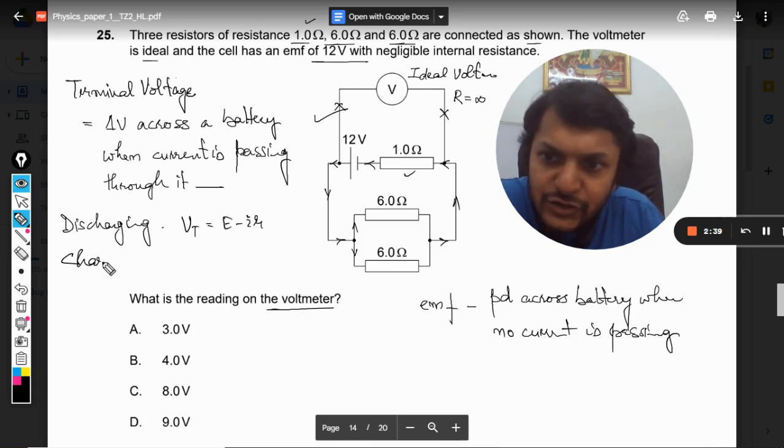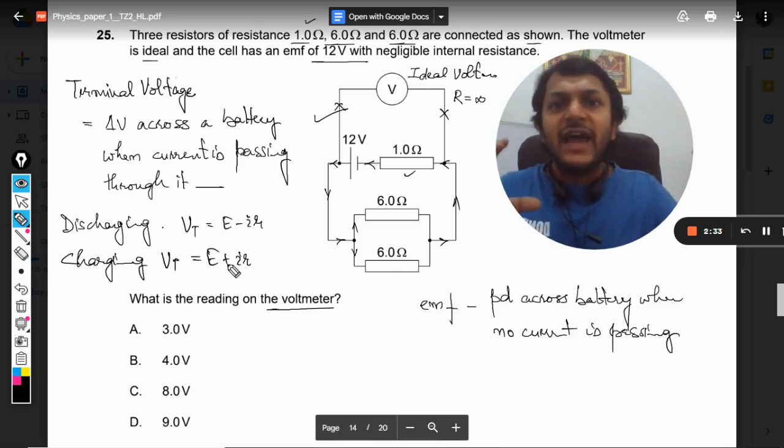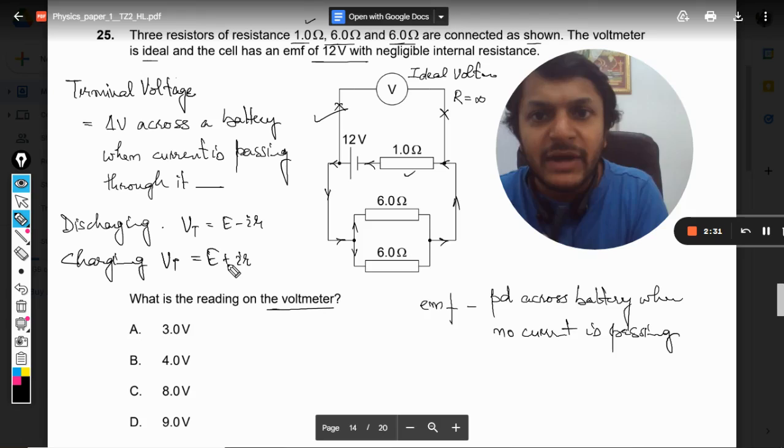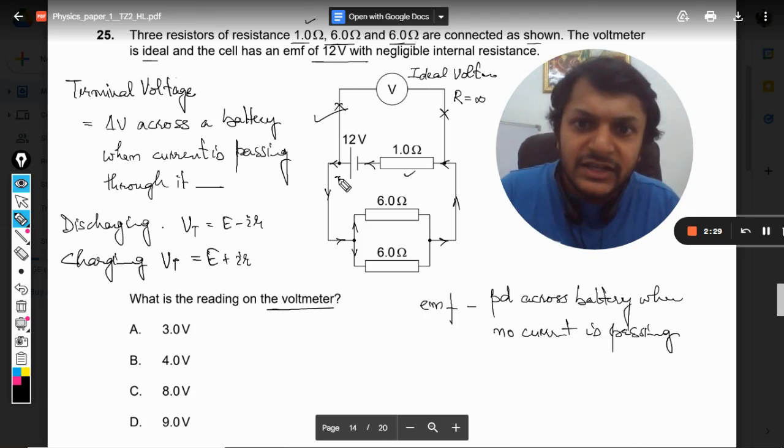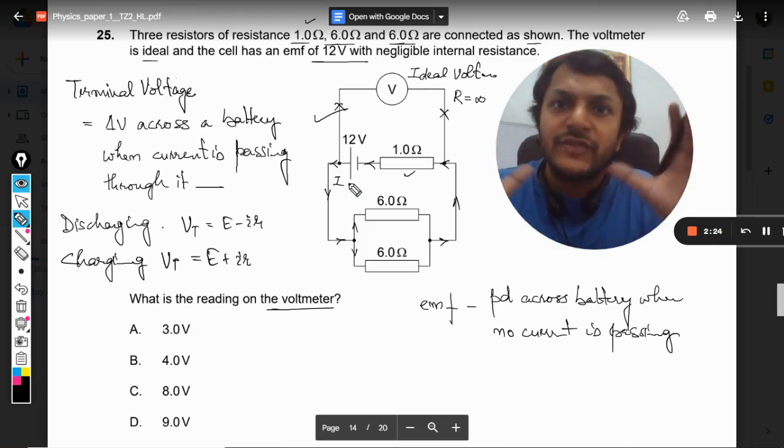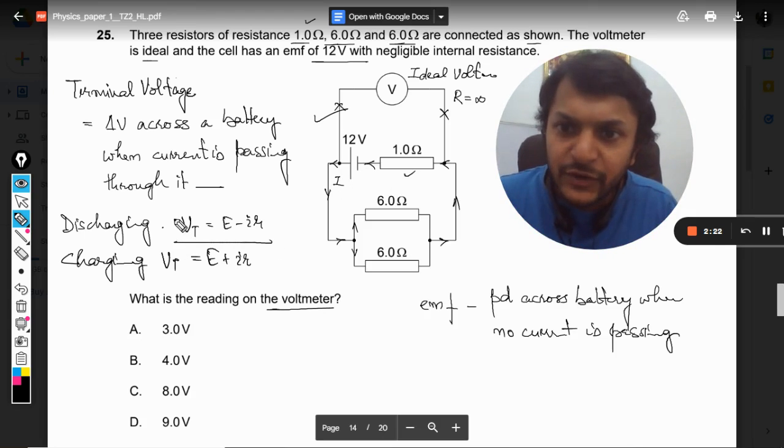And in the case of charging, this VT becomes E plus IR. Charging means current is entering into the positive terminal of the battery. But in this case, current is definitely getting out of the positive terminal, so it is the clear cut case of discharging, so we would be using this formula.